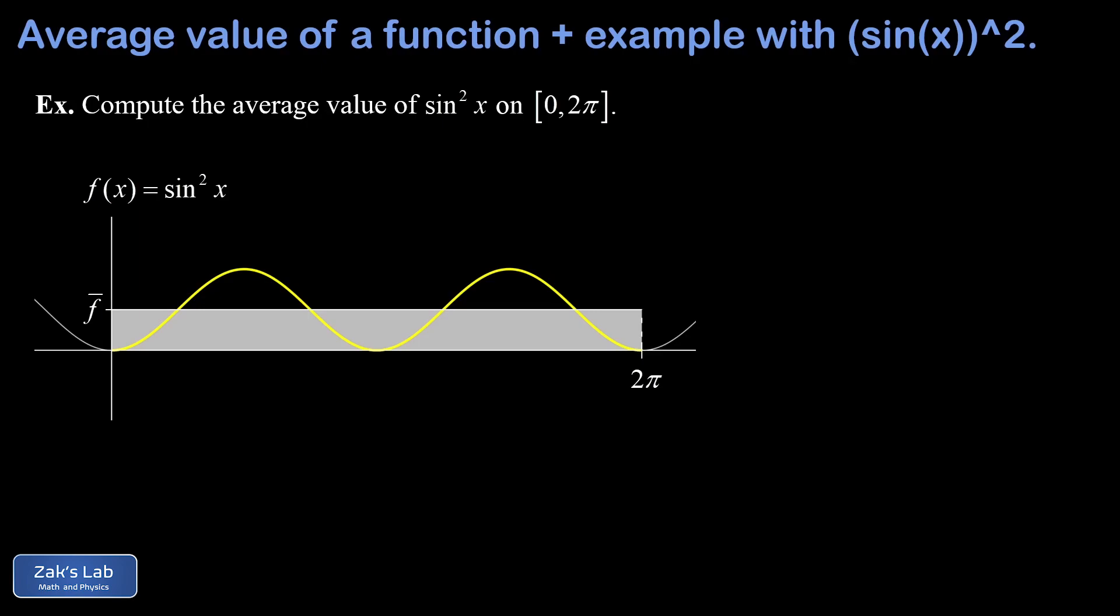So we start computing our average value, and that's 1 over the interval width, which is 2π here, so 1 over 2π times the integral of our function from 0 to 2π—that's the left and right end of the interval we're concerned with—and our function was sine squared x.